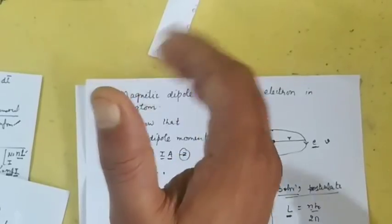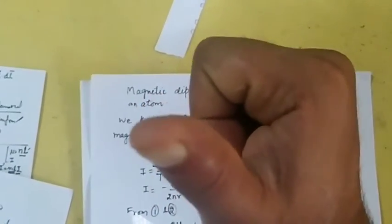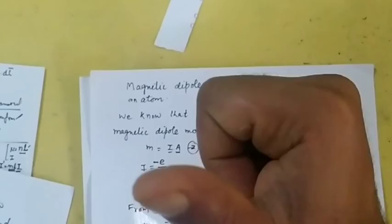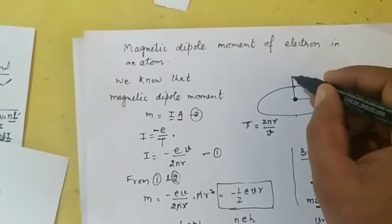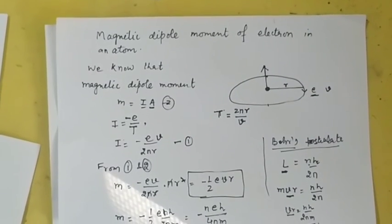As the electron is revolving in this direction, the direction of current will be in the opposite direction. As I am rotating my fingers in the direction of current, the thumb will point in the direction of magnetic dipole moment, which is in the upward direction. Thank you.